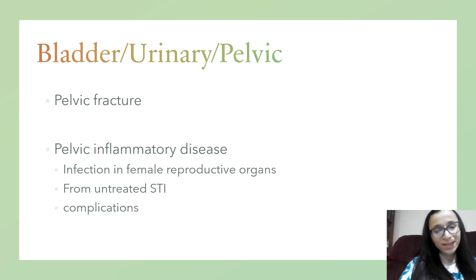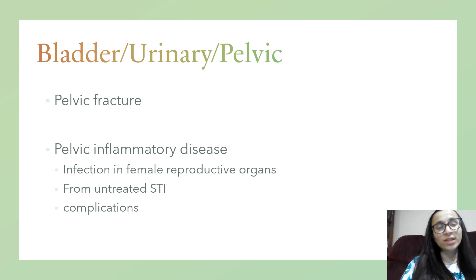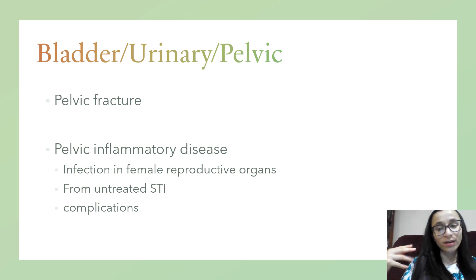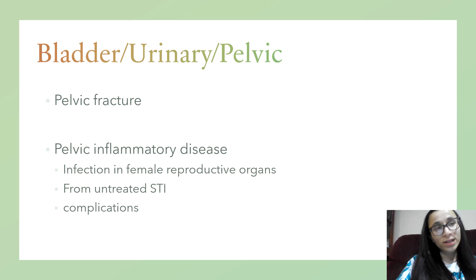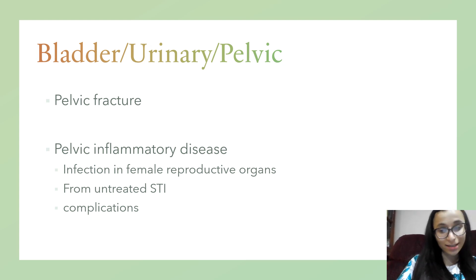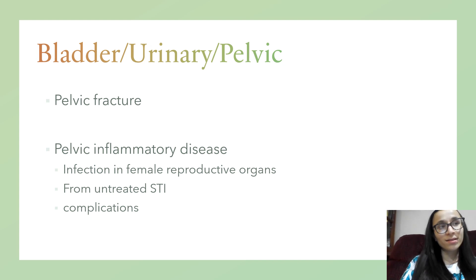Now we go into the bladder, urinary, and pelvic system. Pelvic fractures are usually caused by falls — especially in the elderly — or motor vehicle accidents. Assess for internal hemorrhage, neurovascular deficits, and abdominal injuries. Pelvic inflammatory disease (PID) is when bacteria from the genital tract spread upward through the cervix, causing infection in the female reproductive organs. It's not contagious and is caused by untreated STDs/STIs. Risk factors include multiple sex partners, previous STIs, and unprotected sex. Complications include ectopic pregnancy and infertility. Treat with antibiotics.